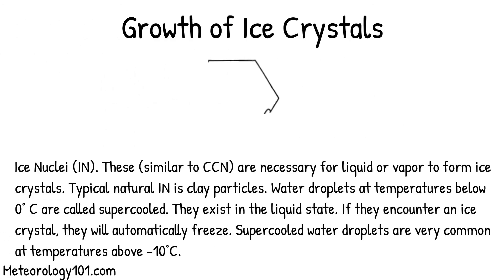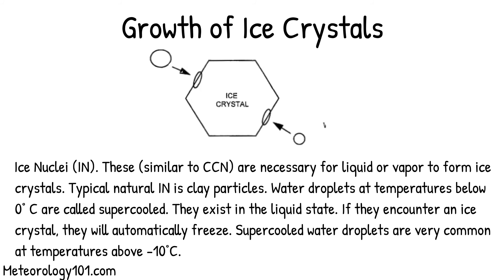Ice nuclei, similar to CCN, are necessary for liquid or vapor to form ice crystals. Typical natural ice nuclei are clay particles. Water droplets at temperatures below 0 degrees Celsius are called supercooled and exist in the liquid state. If they encounter an ice crystal, they will automatically freeze. Supercooled water droplets are very common at temperatures above negative 10 degrees Celsius.